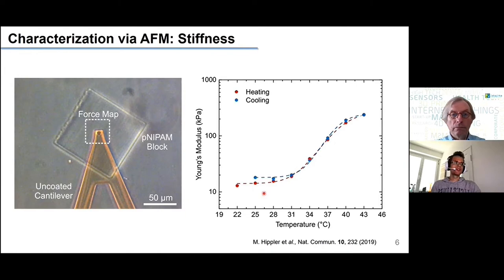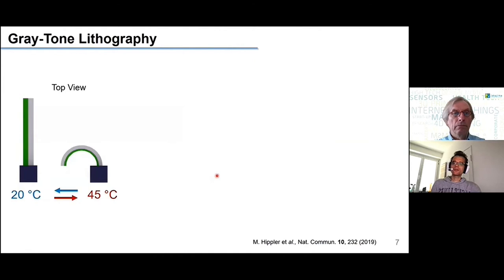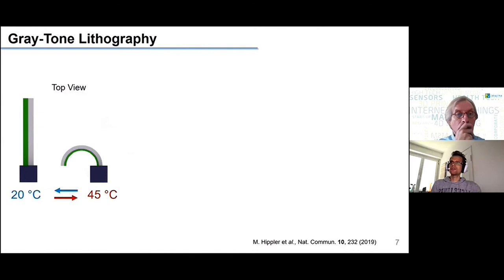So what can we do with that? We want to achieve some sort of defined bending and actuation, which is typically required for soft robotics applications. We employ a biomaterial design system already introduced by a previous speaker. In a top view of this scheme, we have a post attached to a beam with two sides: a green one and a gray one, representing two different materials.